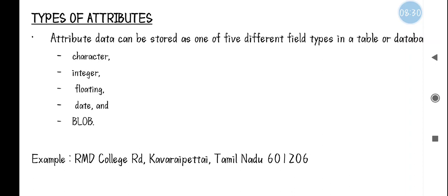The attribute types also include date — for example, if you search for RMD Engineering College you can get data like when the college was constructed or when it was reopened. The last type is BLOB data, which is multimedia data — images, videos, audio, GIFs, everything comes under multimedia data. If I search for RMD Engineering College on Google, I will get not only the address but also images or a map of the college — that is BLOB data. So these are the two major data types of GIS: spatial data and attribute data. Thank you.